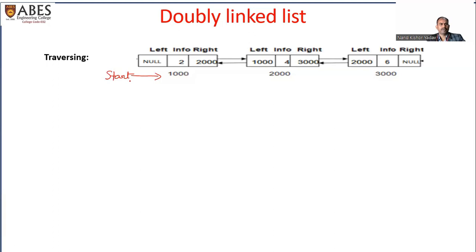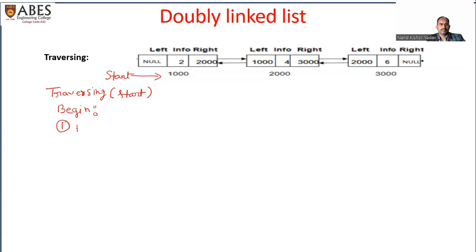Now we will use this information to traverse from the first node to the last node and back. Let's write the traversal algorithm. We take a start variable as input. In the first step, we set a pointer variable ptr which holds the address of the start node. So ptr contains the address of the start node, and we need to move from the starting node to the last node using a loop.